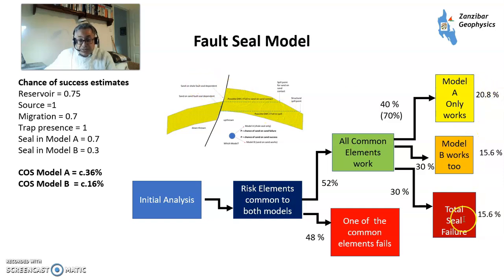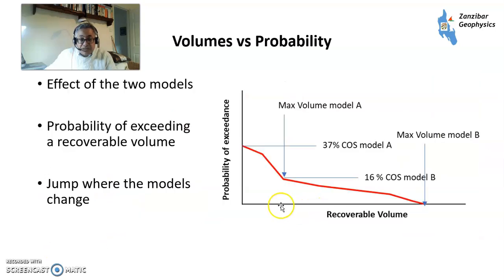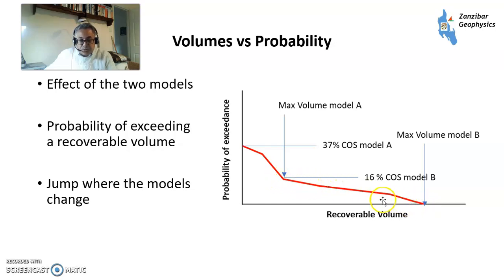So you have different values for the possibilities that are there, and different success values for model A and model B. Looking at the probability of exceedance, you've got a 36–37% chance of getting onto the dance floor. This is model A's curve — it effectively stops here, and then you're having to rely on fault seal to get model B. That's your recoverable volume versus probability of exceedance, showing the jump when the models change.